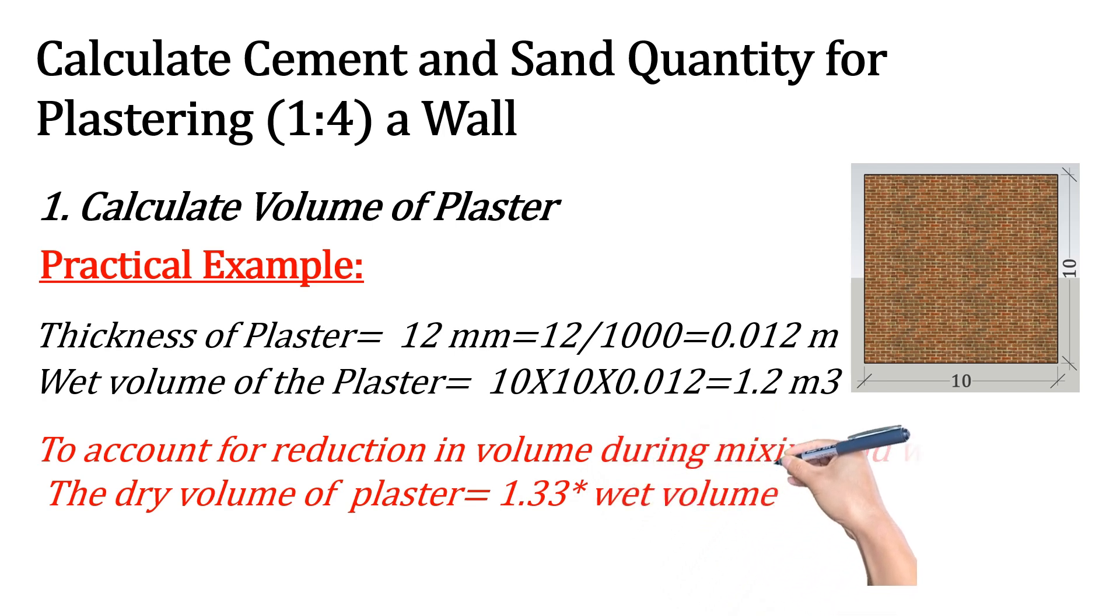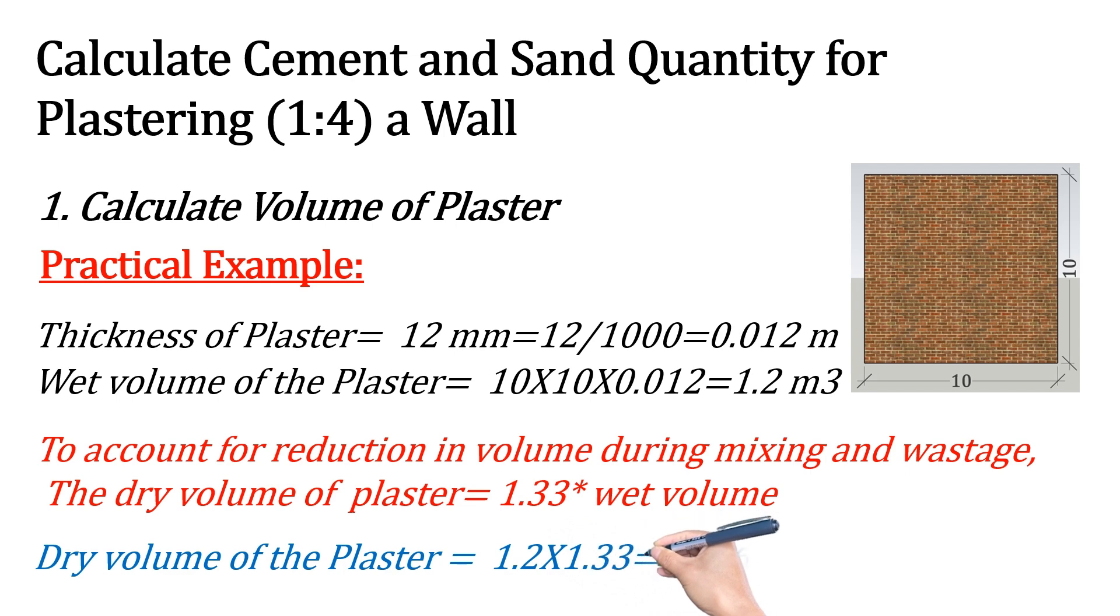Which ultimately gives us the dry volume required for plastering: 1.2 into 1.33 equals 1.596 m³.